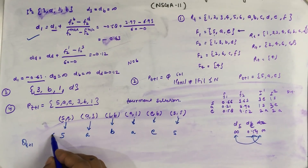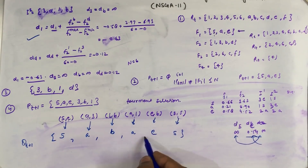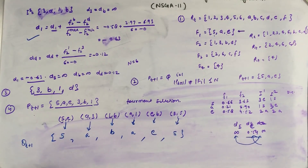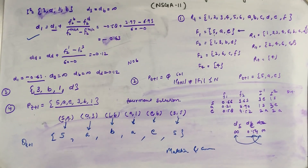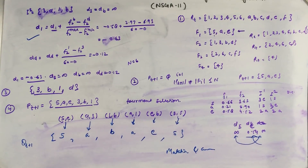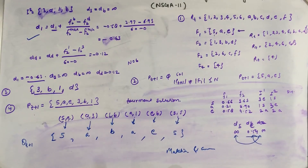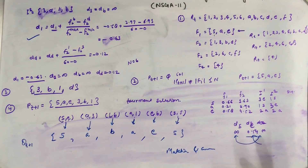This gives us the Q(t+1) set after tournament selection. Based on P(t+1) and Q(t+1), we improve solutions by applying mutation and crossover operators as defined in the genetic algorithm. This is the overall NSGA-II algorithm for finding elitist solutions in the population. The processes of crowding distance and tournament selection operators have been explained through this example. If you have any questions regarding multi-objective optimization, please ask in the comment section. Thank you.